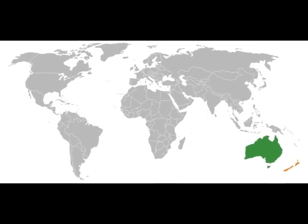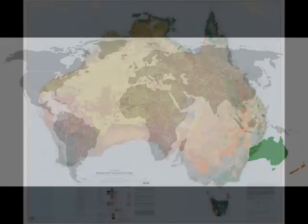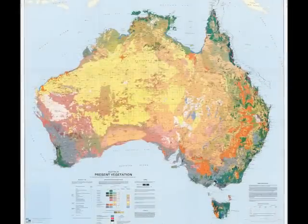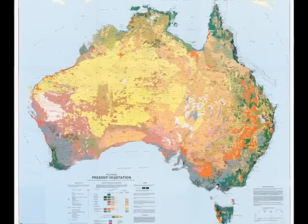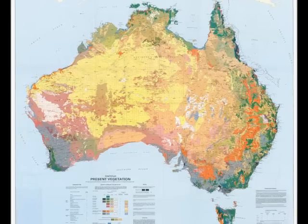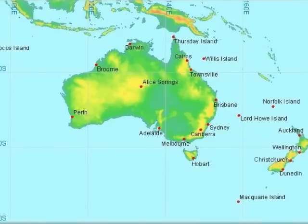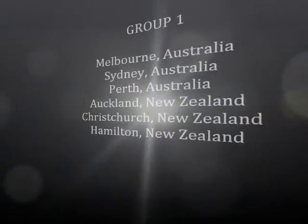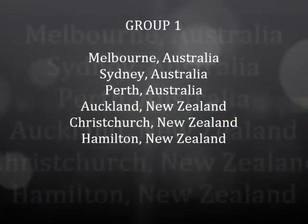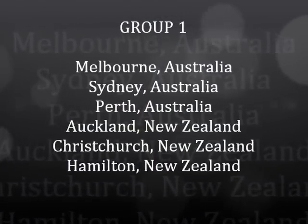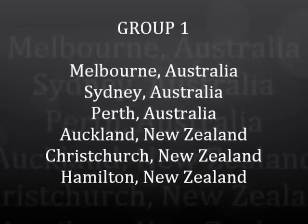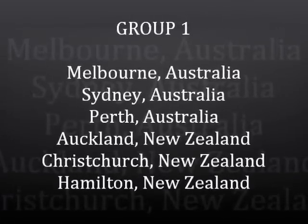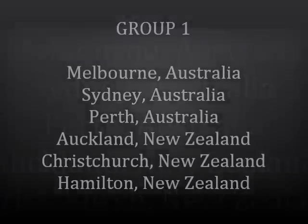We are going to look at two specific groups of cities. The first group is from the area around Australia, including New Zealand — we'll call this Group 1. Group 1 includes Melbourne Australia, Sydney Australia, Perth Australia, Auckland New Zealand, Christchurch New Zealand, and Hamilton New Zealand.